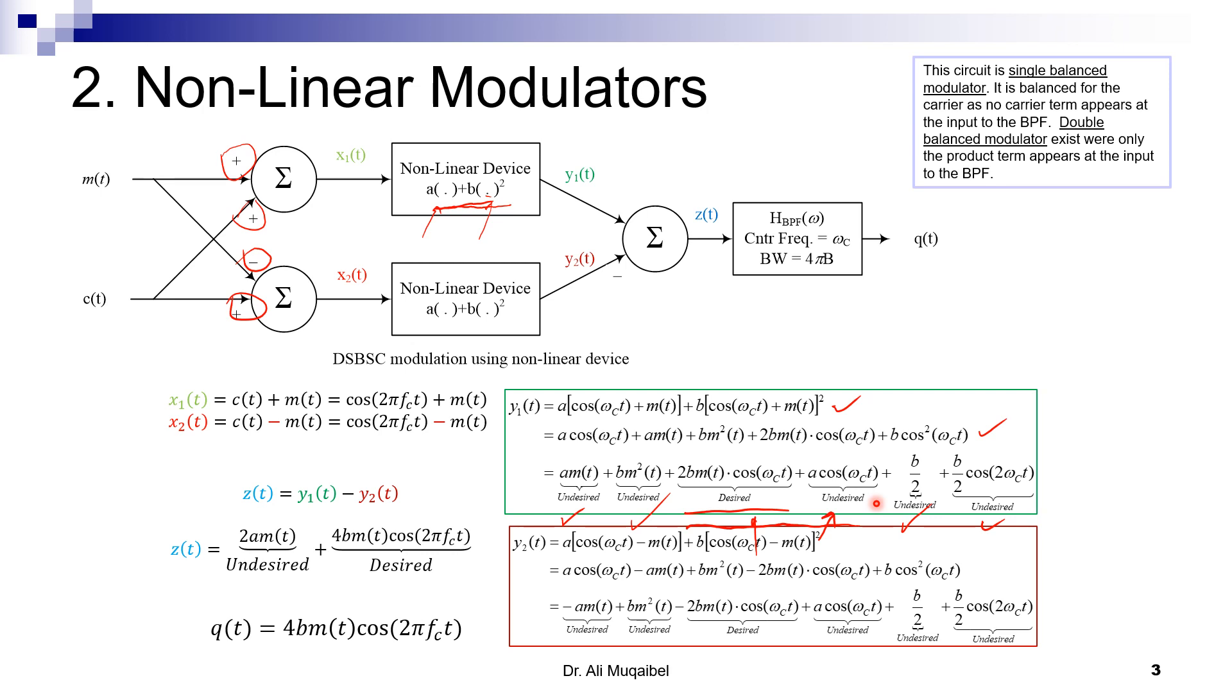This circuit is called a single-balanced modulator. It's balanced for the carrier, so the carrier is dropped out—no carrier term appears at the output or at the input to the band-pass filter. We can also have double-balanced modulators. With double balance, we don't need the filter—we get rid of both undesired terms because we just get the product term.